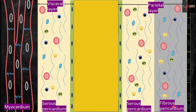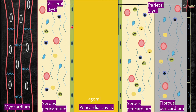This is the serous pericardium, and here is the fibrous pericardium. In between the serous pericardium you have the pericardial cavity containing the fluid, which is less than 50 milliliters — this is the normal fluid present in the cavity. Here are the mesothelial cells; they are squamous, flat cells that secrete or absorb the pericardial fluid. Underlying these flat cells you have connective tissues with collagen and elastic fibers.